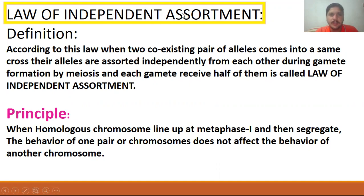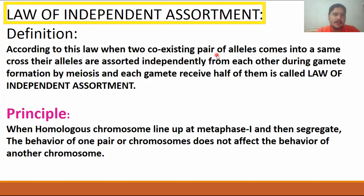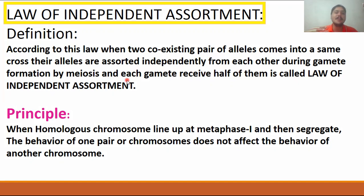The law of independent assortment states that when two co-existing pairs of alleles come into the same cross, their alleles are assorted independently from each other during gamete formation by meiosis. And each gamete receives half of them — this is called the law of independent assortment.